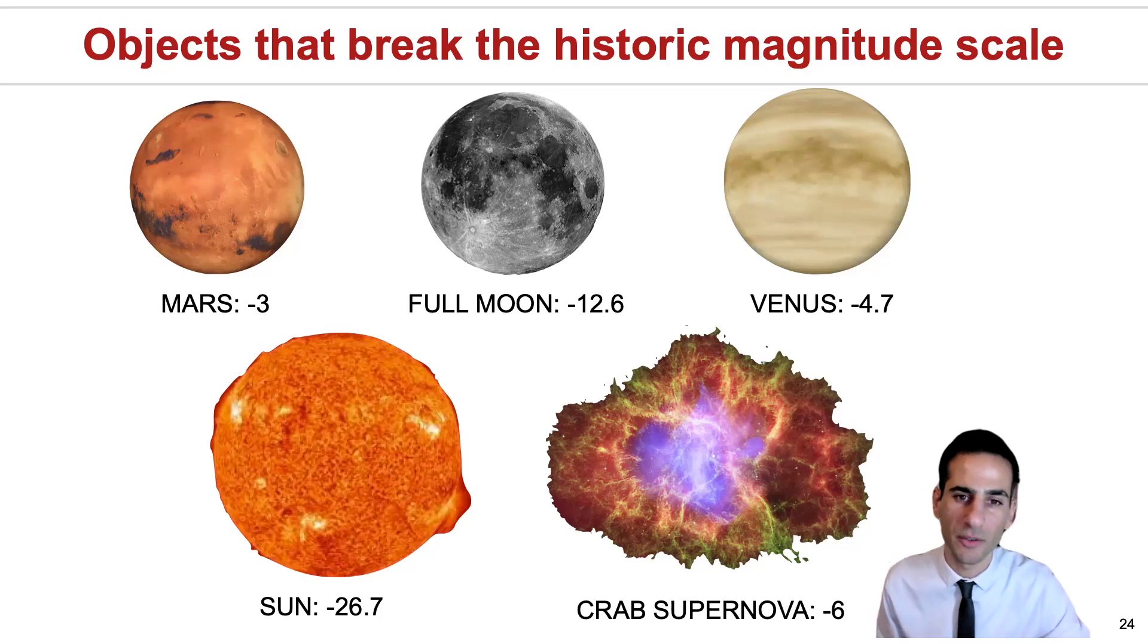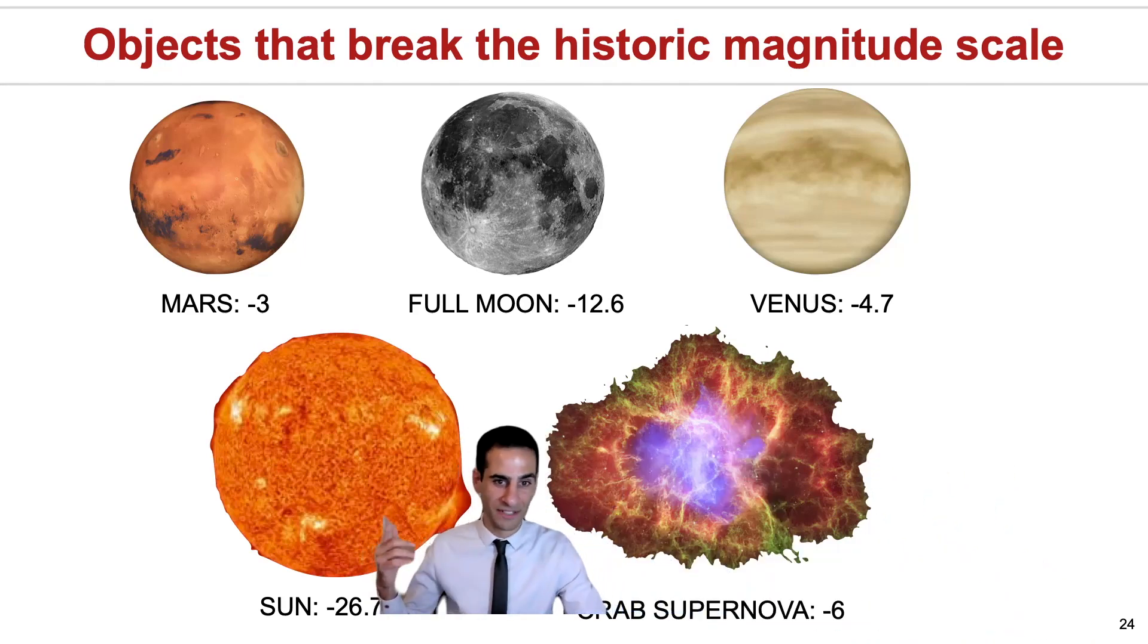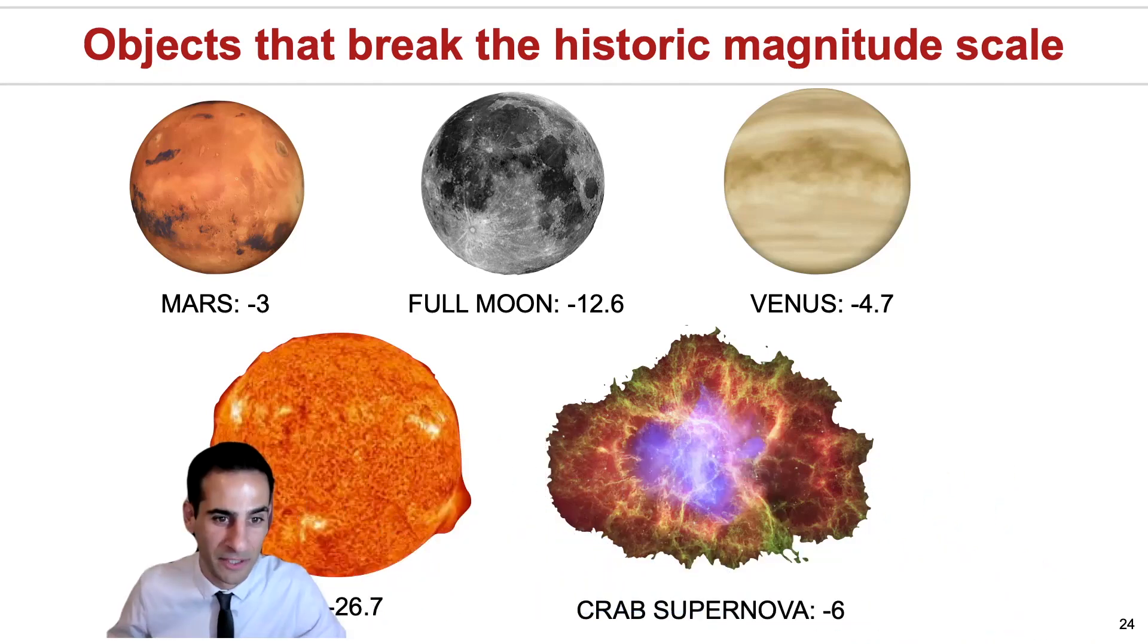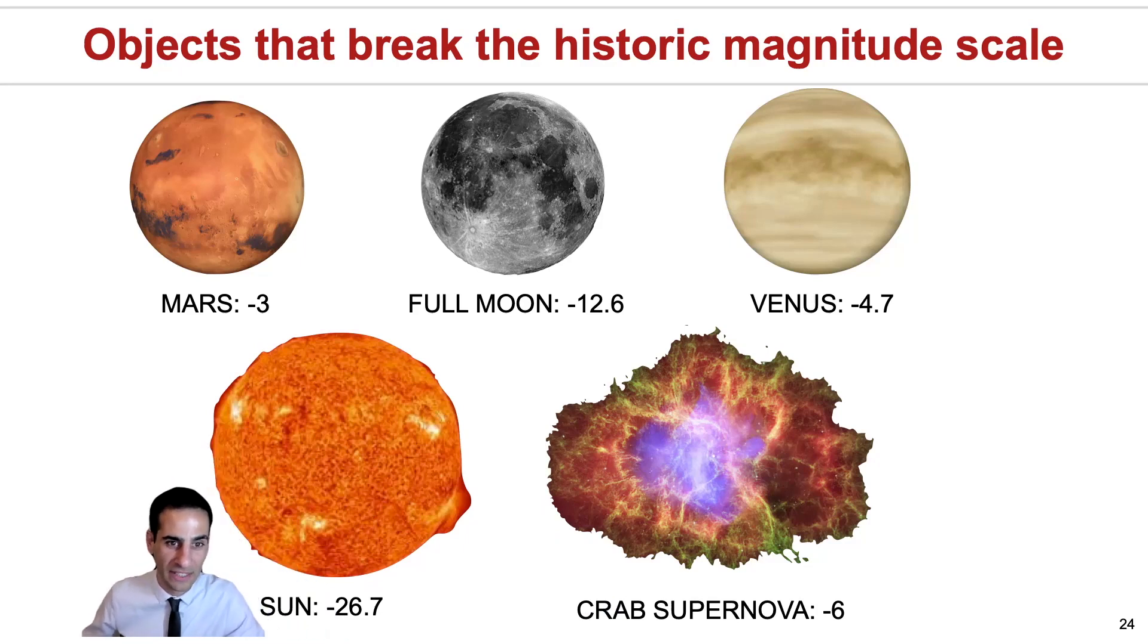It is important to mention that the Greeks already knew objects that would break the historic magnitude scale. For example, there's the sun. In Lancaster, maybe you wouldn't be aware of this, which is incredibly bright. We're going to be able to calculate the magnitude. But the magnitude of the sun, the apparent magnitude, is minus 26.7, definitely below one.